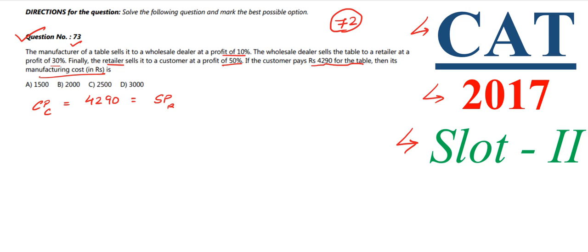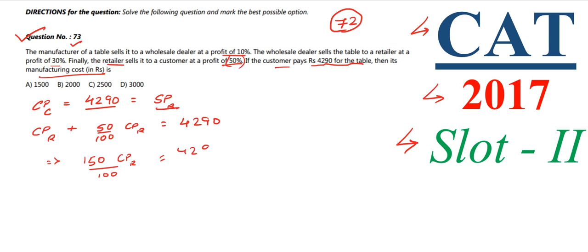Since the retailer sells the table to the customer for 4290, this is the selling price for the retailer. The retailer keeps a 50% profit on his cost price, so: CP of retailer + 50% of CP = 4290, which gives us 150 × CP of retailer / 100 = 4290. Solving this, the cost price of the retailer equals 4290 × 100 / 150 = 2860 rupees.